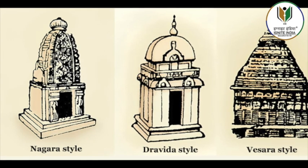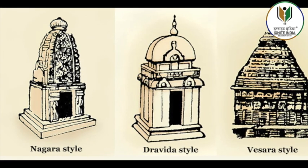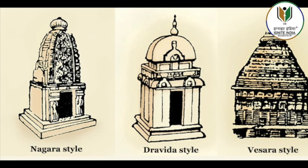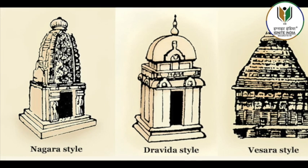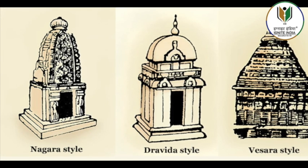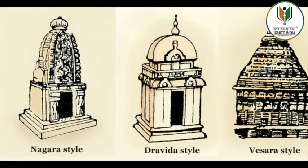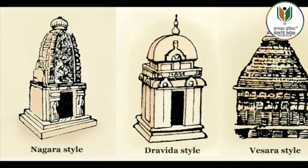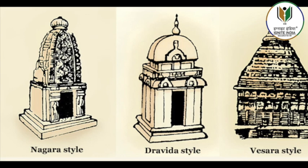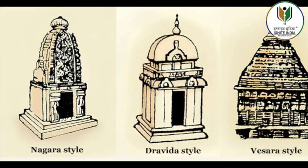In Odisha, the main architectural features of temples are classified into three orders: Rekha Deula, Pidha Deula, and Khakhara.